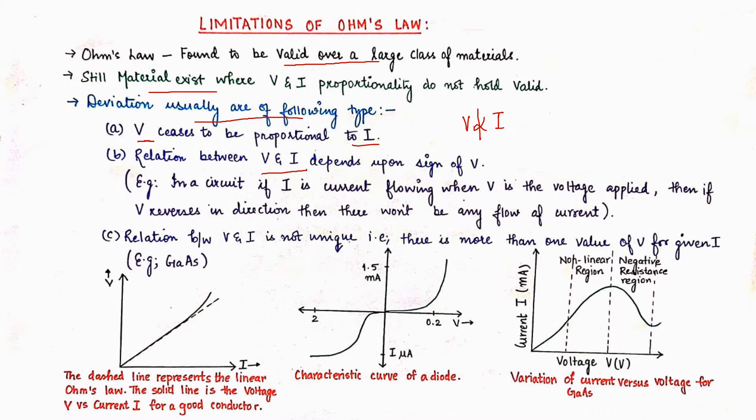Then relation between V and I depends upon the sign of V. For example in a circuit if I is current flowing when V is voltage applied, then if V reverses its direction then there won't be any flow of the current. One of such examples we will see like in the diodes.